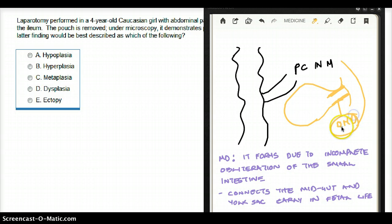This omphalomesenteric duct later progresses to become the vitelline duct. But the persistence of the omphalomesenteric duct gives rise to Meckel's diverticulum. What's interesting is that Meckel's diverticulum will have other types of tissues in it.